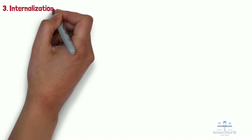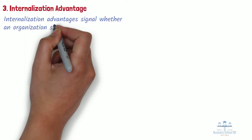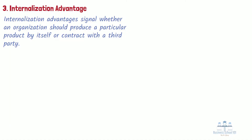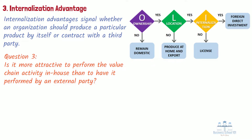Section 3: Internalization Advantage. Finally, internalization advantages signal whether an organization should produce a particular product by itself or contract with a third party. Therefore, the third question that management should ask itself is: is it more attractive to perform the value chain activity in-house than to have it performed by an external party? If the answer is no, then management might want to license its product design to an independent foreign company or outsource production to an original equipment manufacturer, OEM.